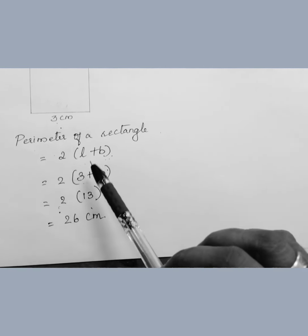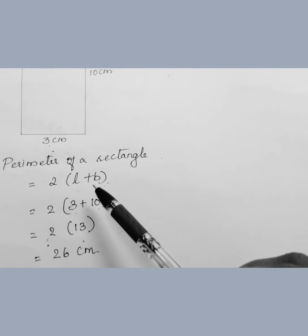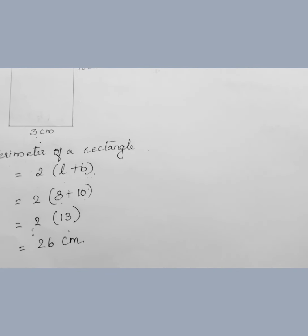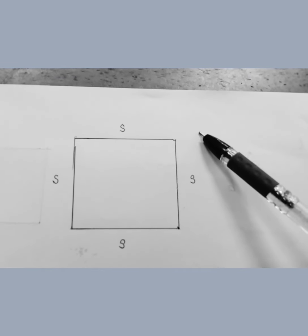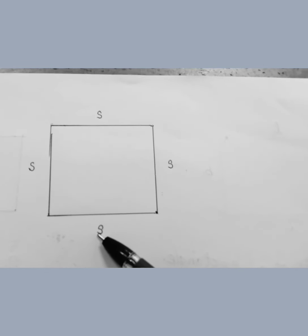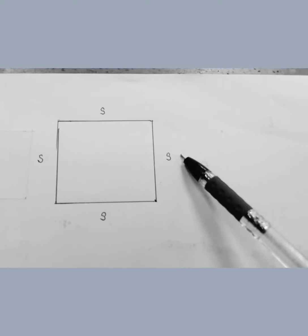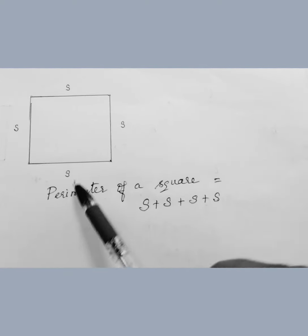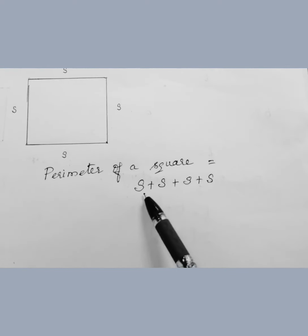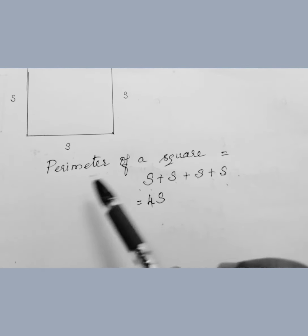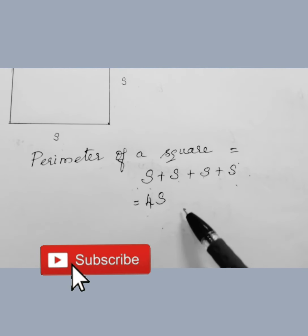Now let's learn how to find the perimeter of a square. A square has all 4 sides equal. To find the perimeter, we sum up all the sides: S plus S plus S plus S, which gives us 4S. So the formula for finding the perimeter of a square is 4 times S.